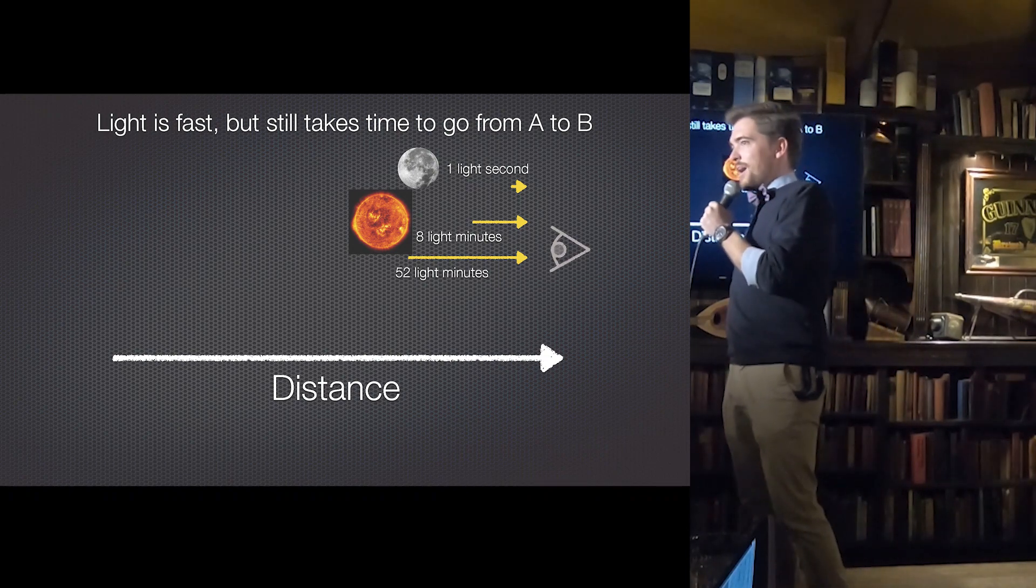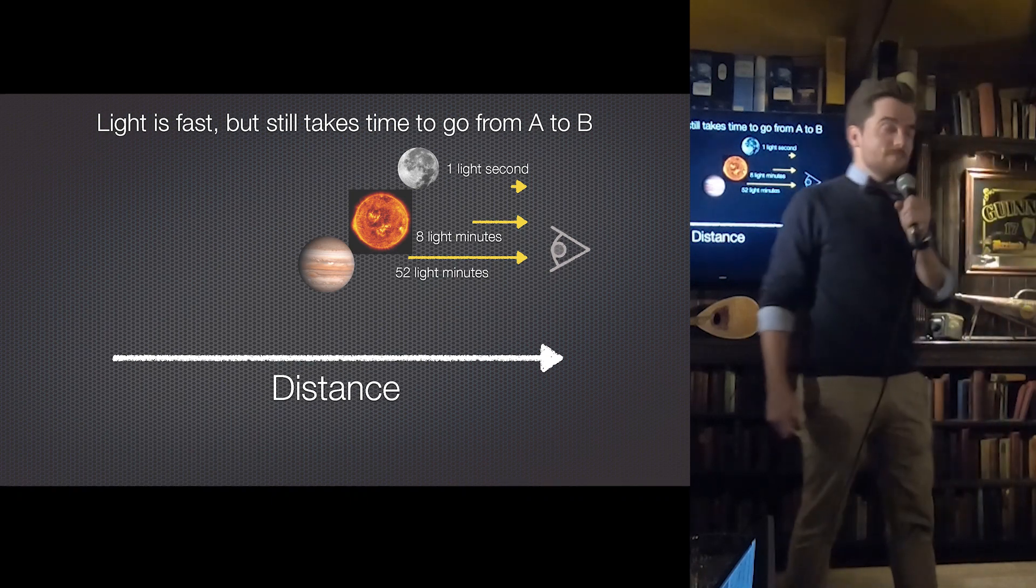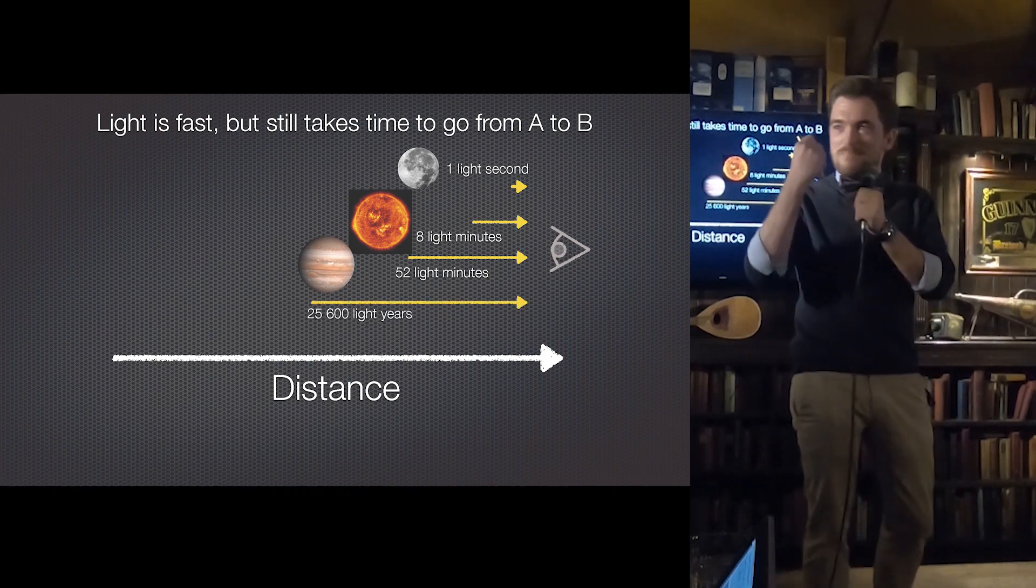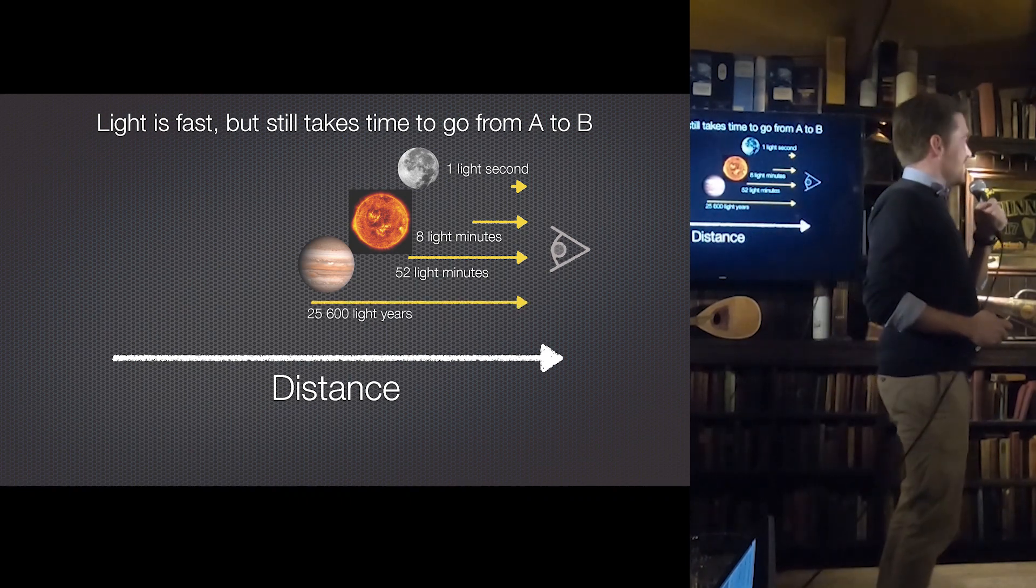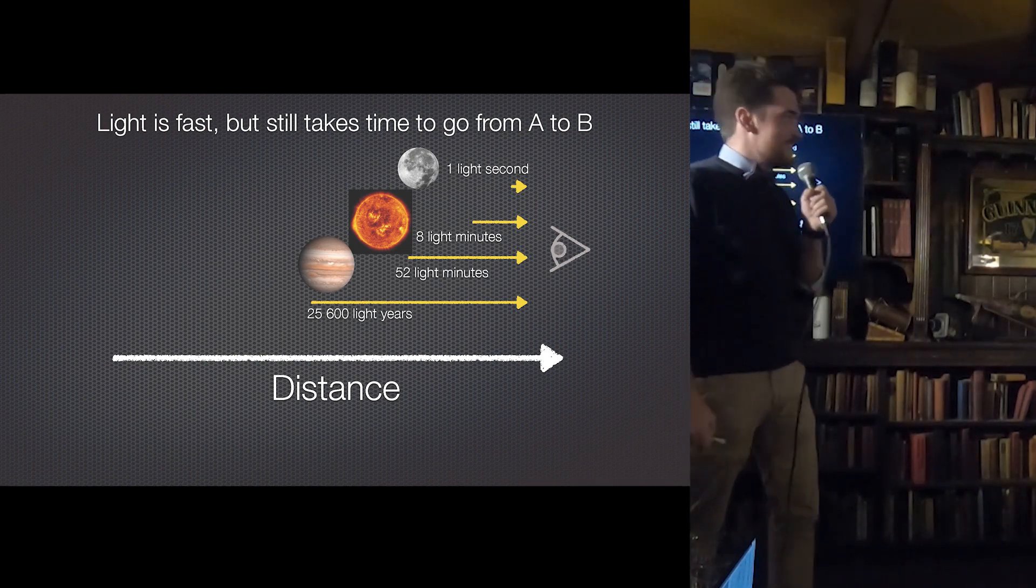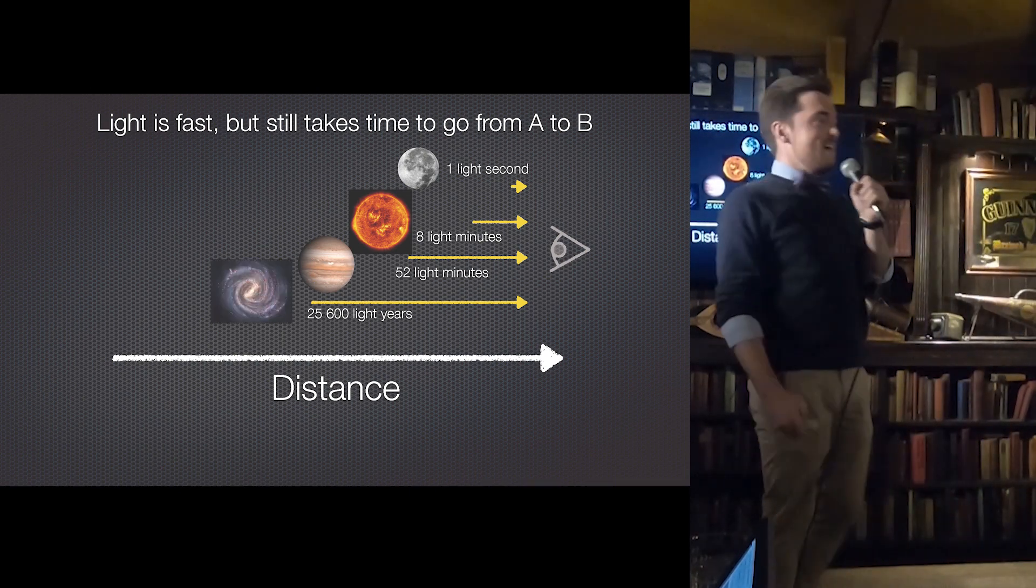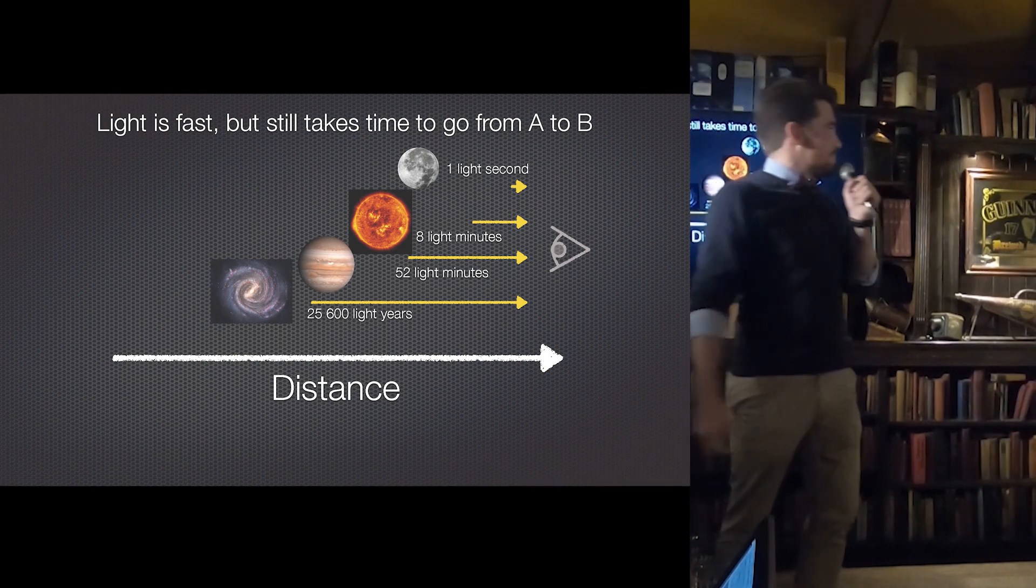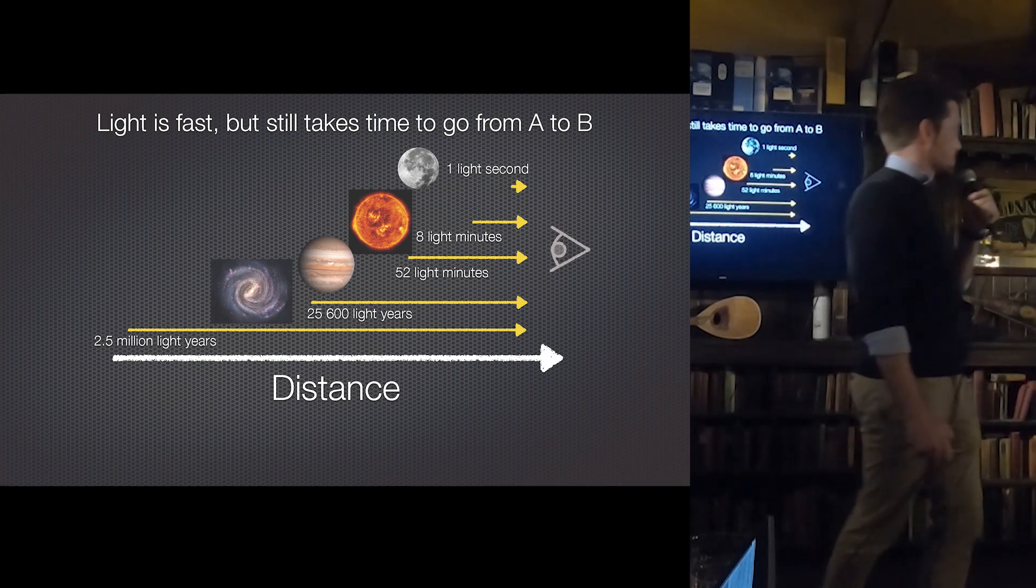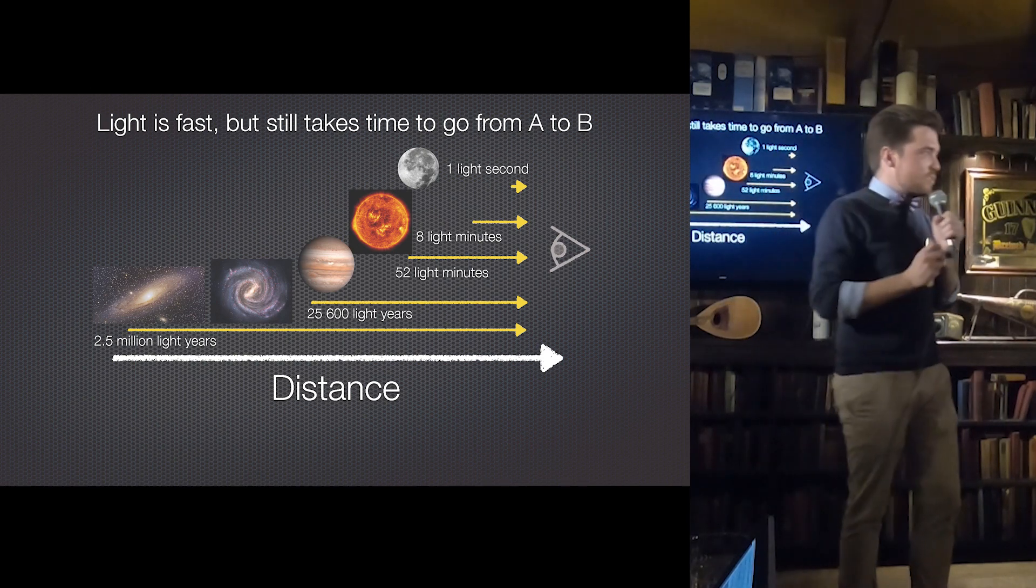52 light minutes away. Jupiter! Excellent! Three from three. Man, you guys are good. Has somebody else already given this talk? We're going to ramp it up a little bit here. 25,600 light years. The center of the Milky Way is absolutely correct. And then, last of all, two and a half million light years away. Andromeda. Absolutely. So these are our distance ladders in the time that it takes light to travel from point A to point B.